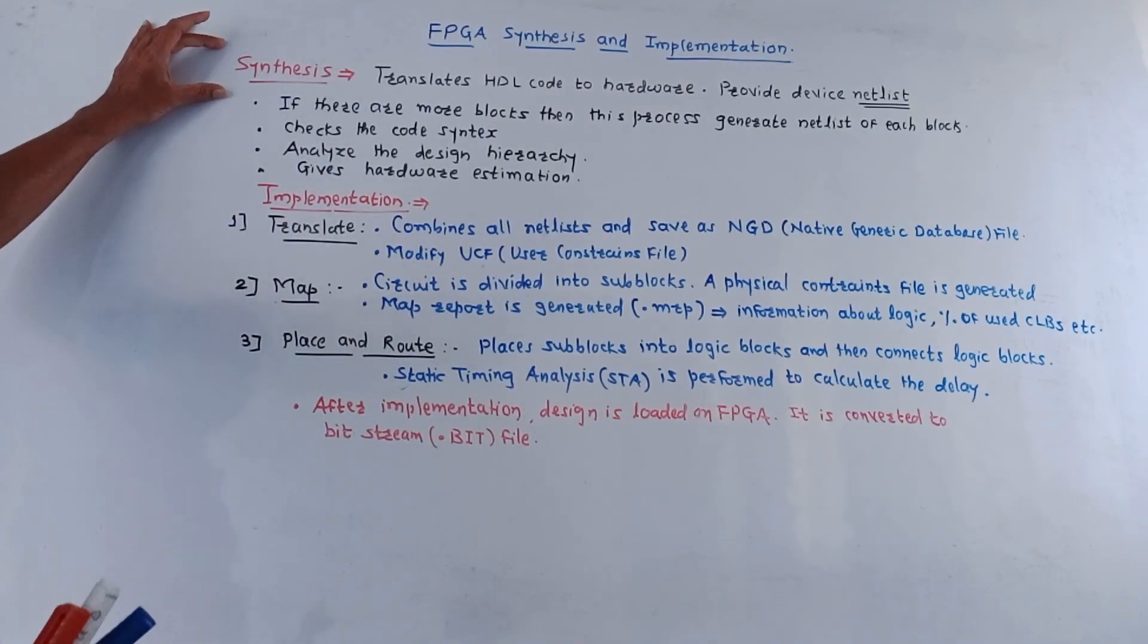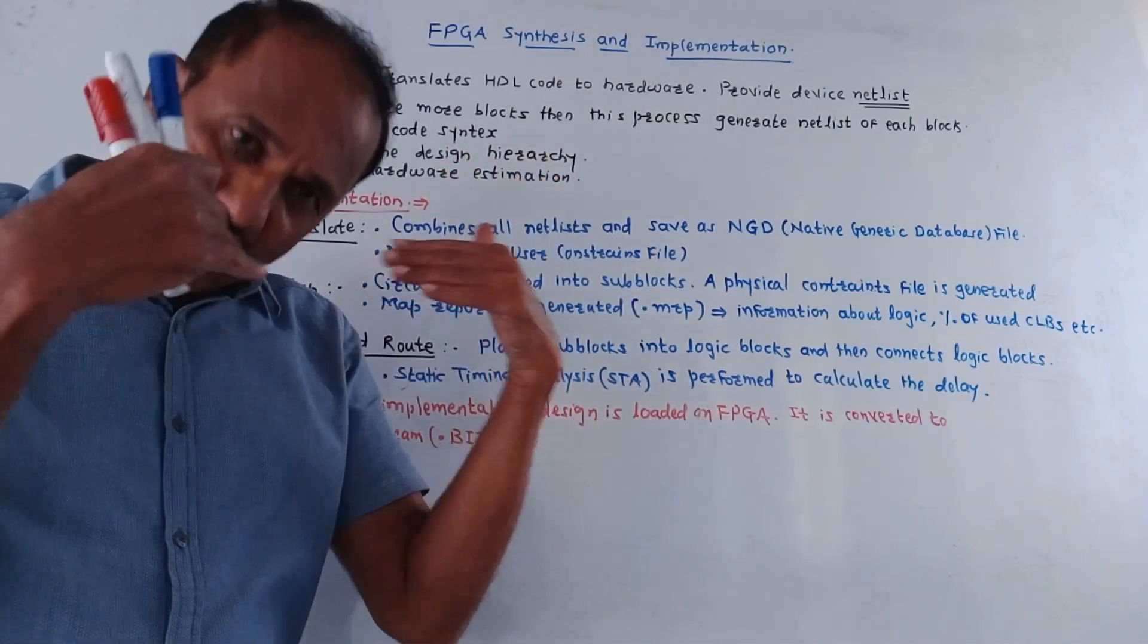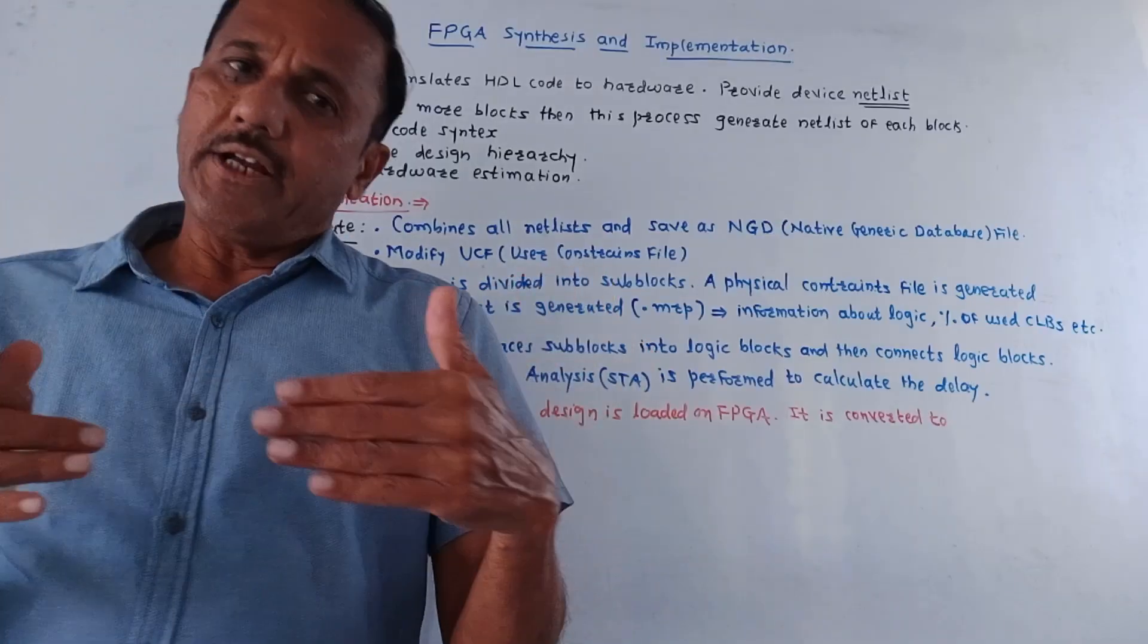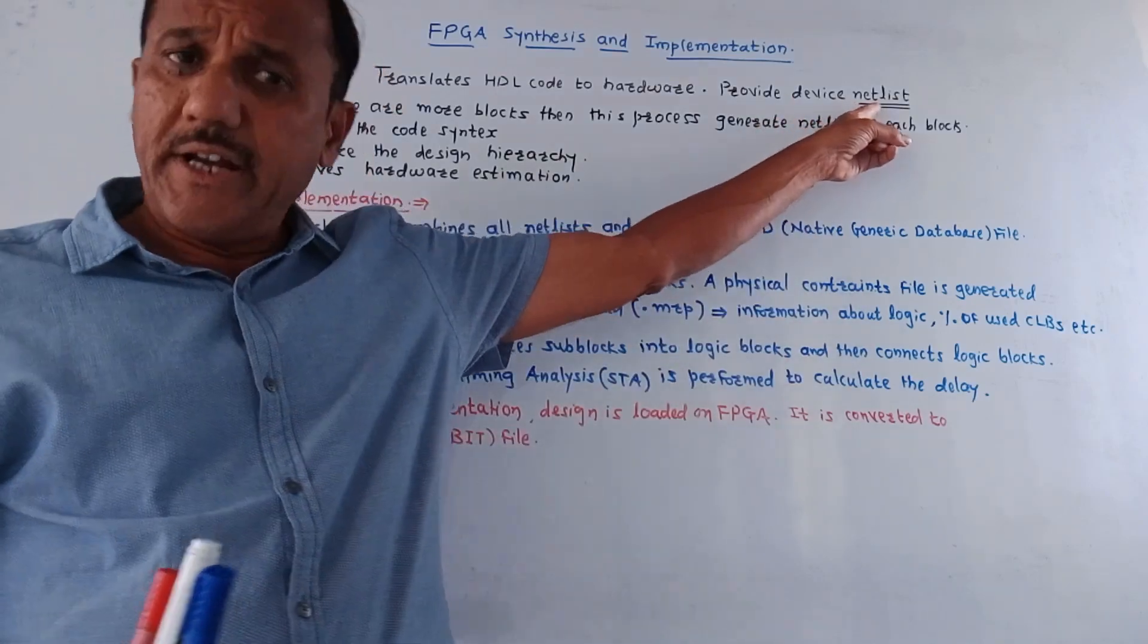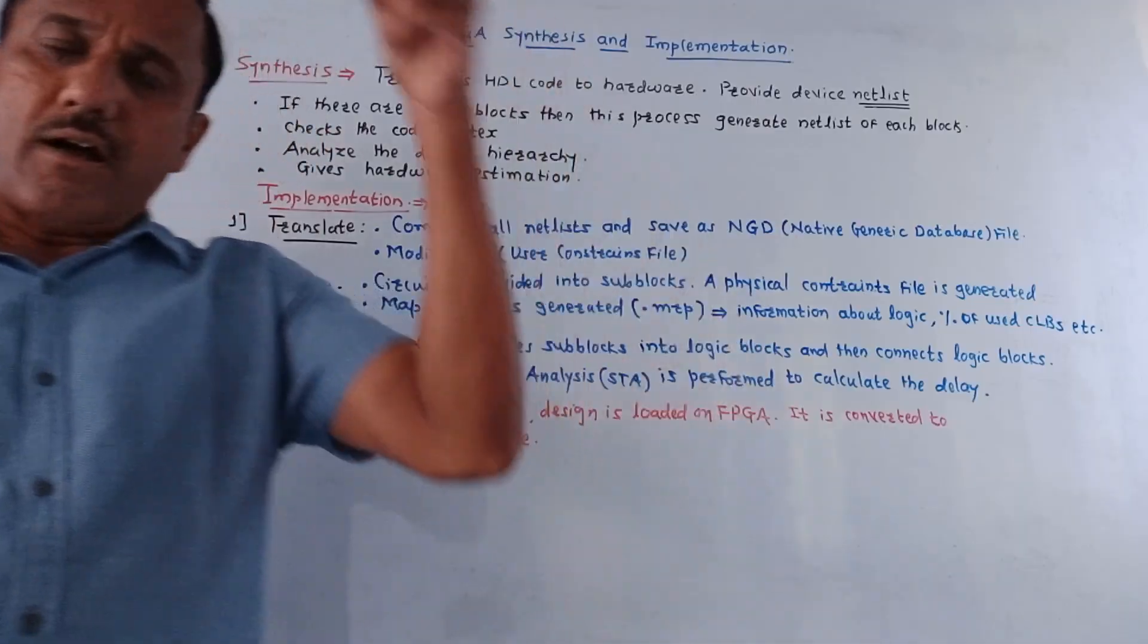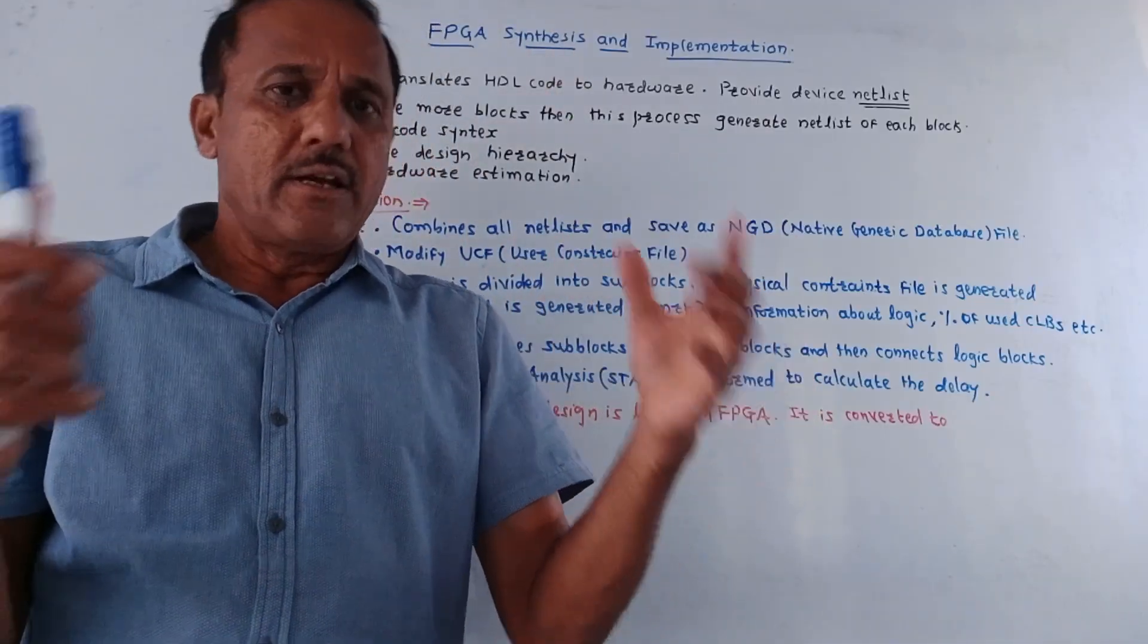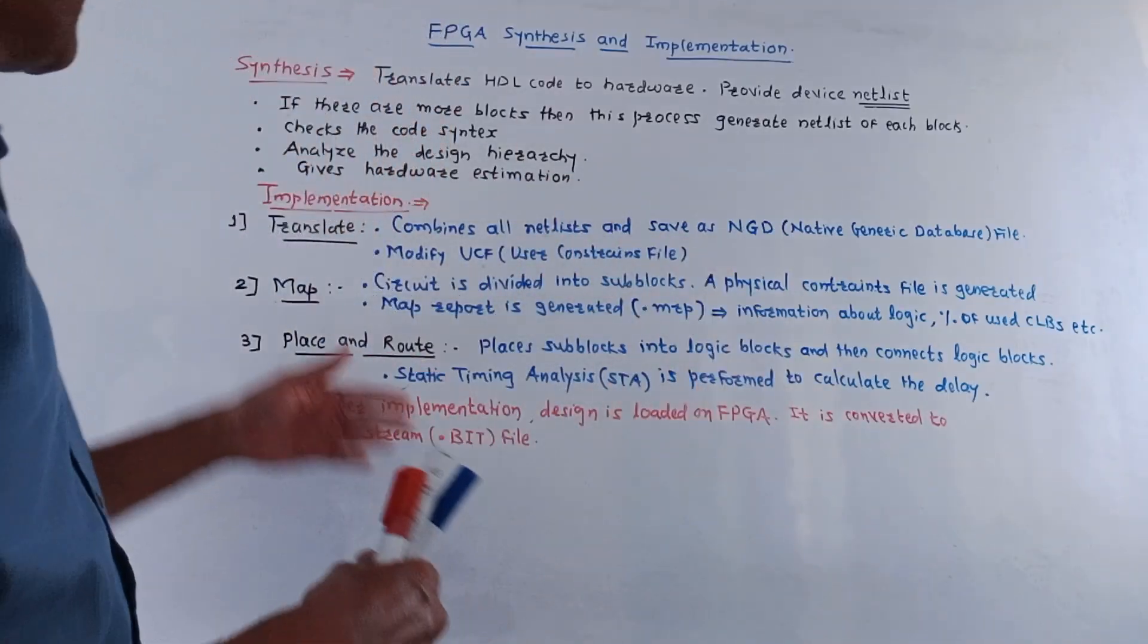First part is synthesis. Synthesis means this step translates HDL code to the hardware and it provides the complete netlist. The meaning of this word netlist: it is the device netlist. Netlist means it provides a complete circuit with logical elements. Logical elements contents or number of logical gates used, the number of flip-flops and so on.